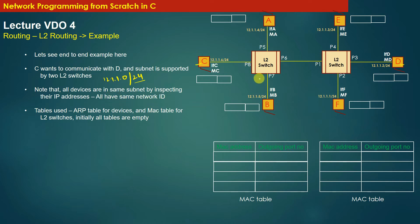This is how we connect the L2 switch to the machines. Note that all the devices are in the same subnet by inspecting their IP address — all of them have the same network ID, which is 12.1.1.0/24.